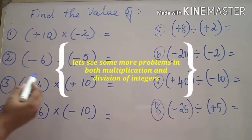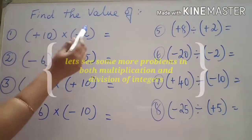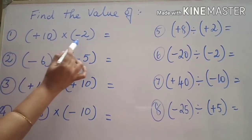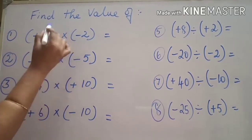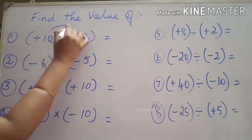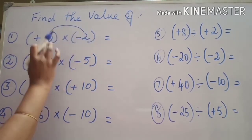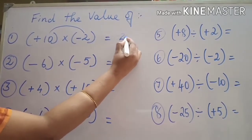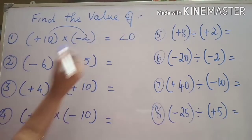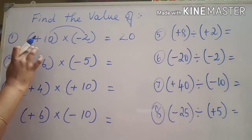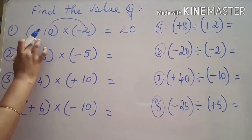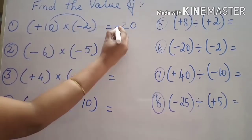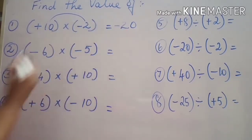Let us learn a few more example sums. First: plus ten into minus two. Find the product first — ten into two is twenty. Plus positive into negative is different sign, so the answer is negative: minus twenty.